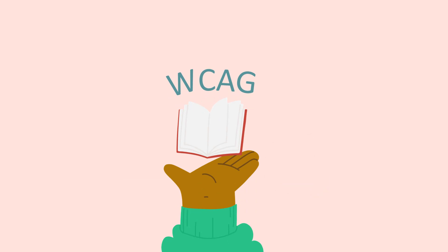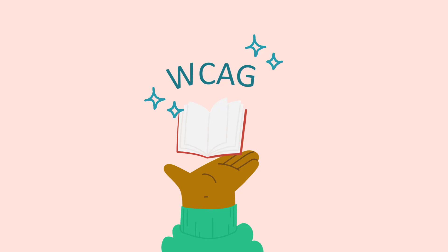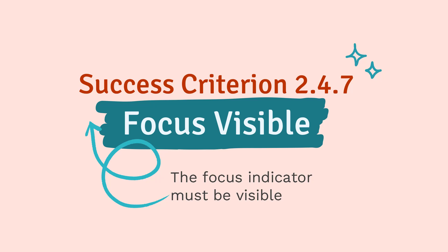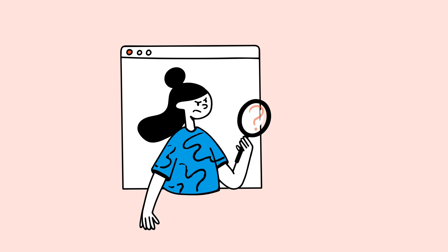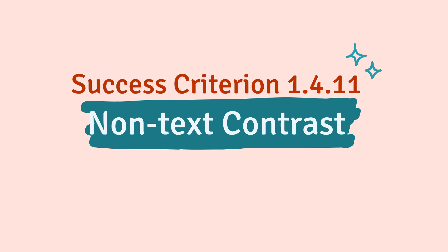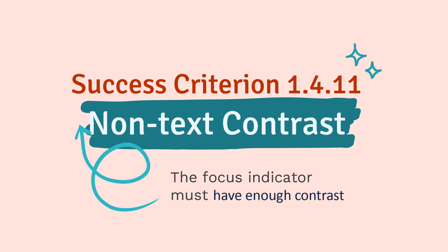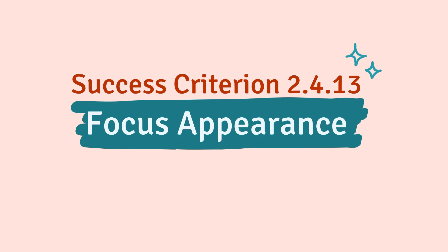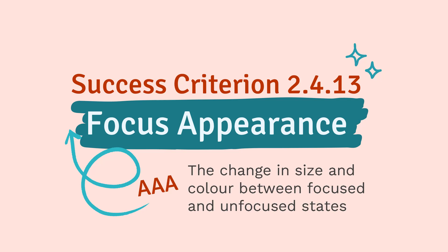There are two other level AA success criteria that apply to our focus indicator design. 2.4.7 Focus Visible just says the focus indicator must be visible — it doesn't say what visible means or how to measure it. 1.4.11 Non-Text Contrast says the focus indicator must have enough contrast, but doesn't take into account the difference between the focused and unfocused state. 2.4.13 Focus Appearance, which is a AAA requirement, is about the change in size and color between the focused and unfocused states.